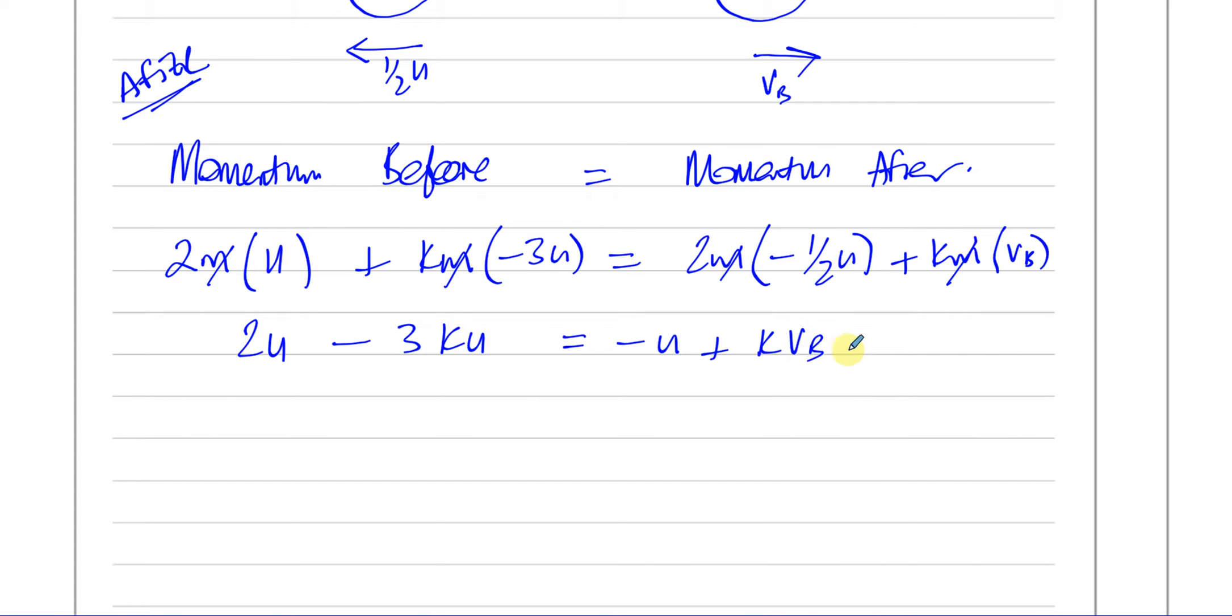Let's bring the K terms together and the non-K terms together. So we've got 2U plus U, which is 3U. And this is KVB plus 3KU. Now take out K as common here.